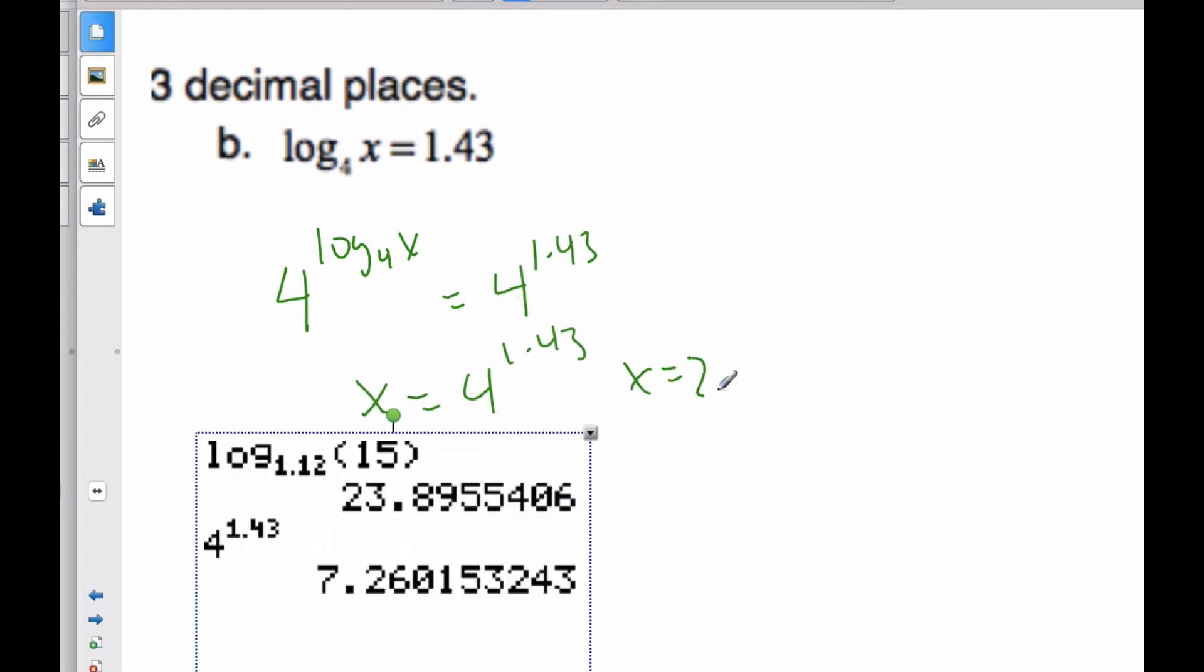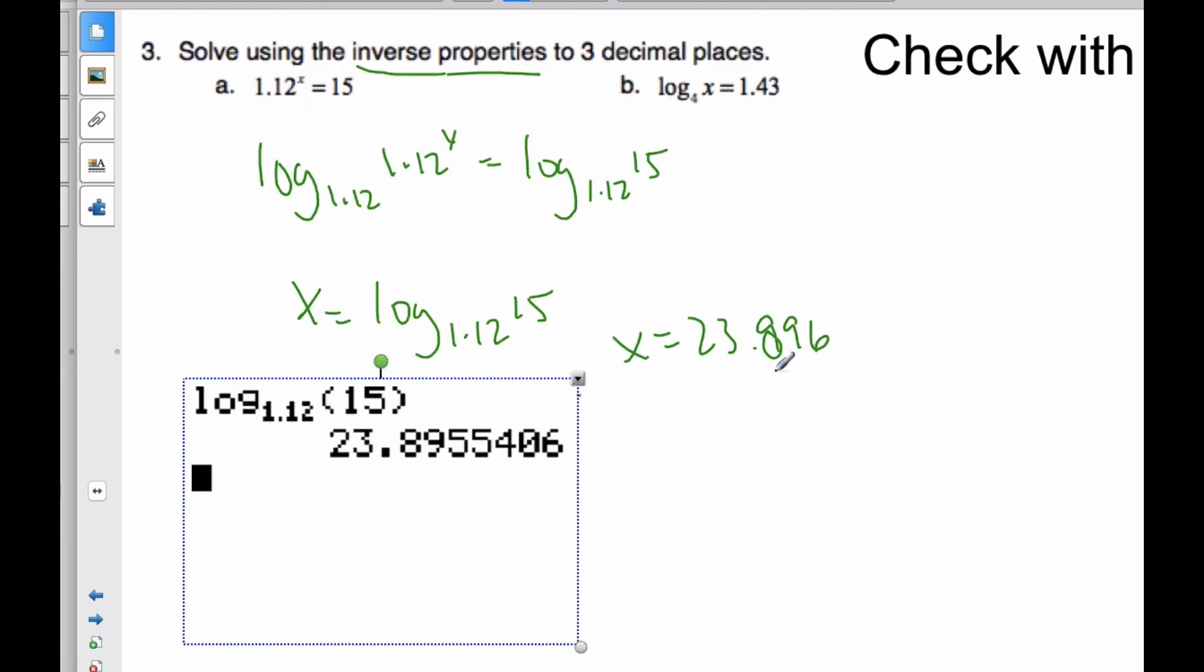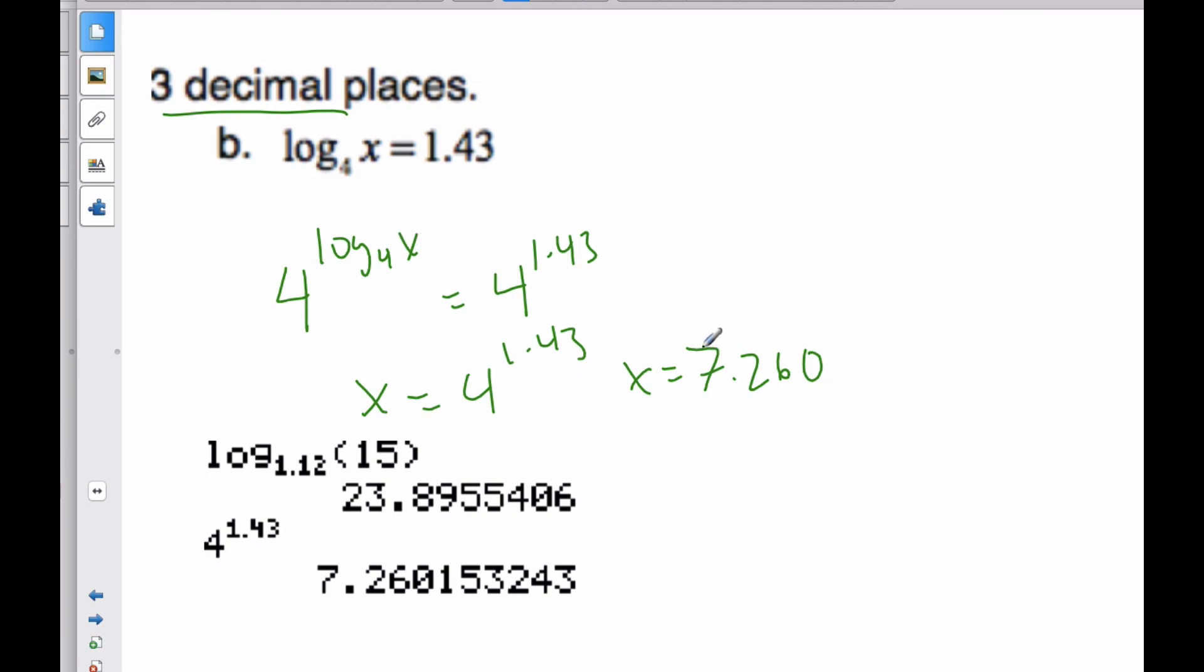So x is equal to 7.260. It says to three decimal places. So that's what I did. Did I do that? This one I also did three decimal places. Well, that is good. I should check this with Desmos. So, go into Desmos.